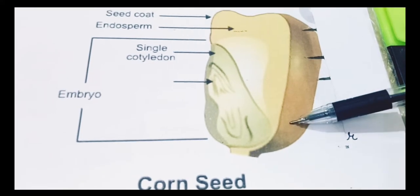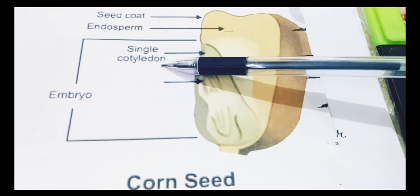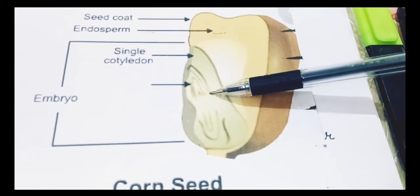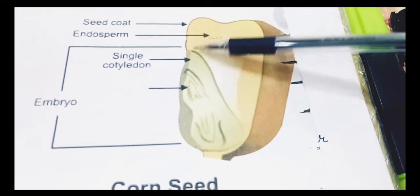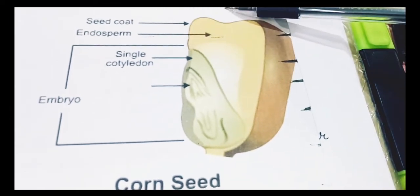See, this is the seed coat. The outer covering we call it seed coat. And this is inside, it's a cotyledon which always stores baby plant in it. We call it monocot because it is having only a single cotyledon. Okay? So we call this seed as a monocot seed.